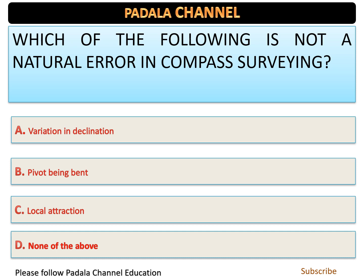Which of the following is not a natural error in compass surveying? Under natural errors we look at particular and accidental errors. The correct answer is option B — pivot being bent, which is an instrumental error, not a natural error.